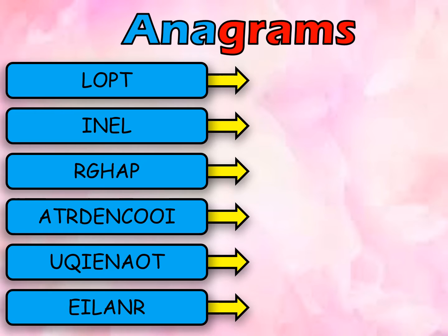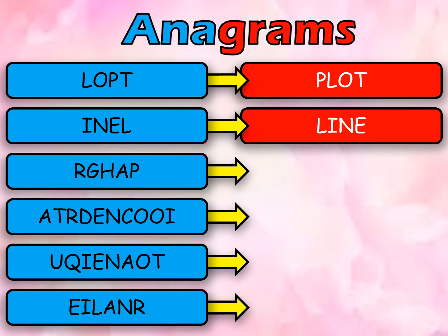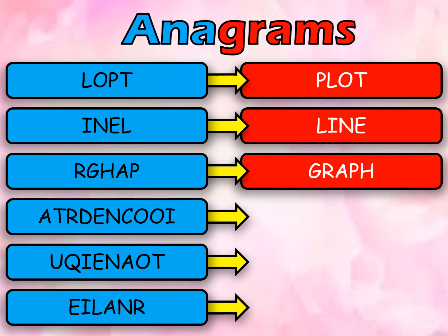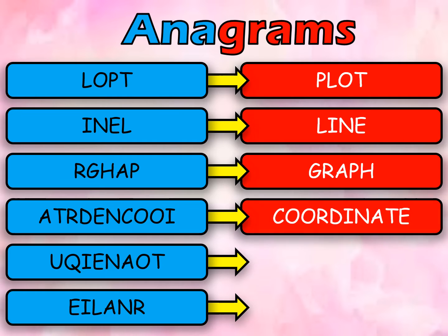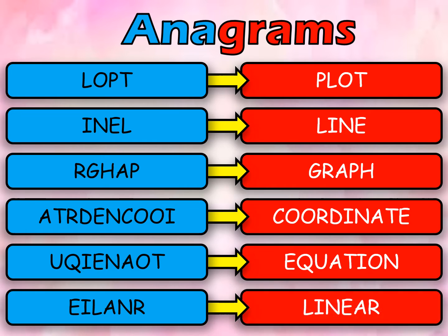So let us have anagrams. For the first word, it is flat. For the second word, it is line. For the third word, it is graph. And for the fourth word, it is coordinate. And for the fifth word, it is equation. And for the last one, it is linear.